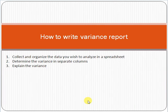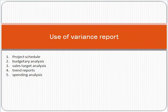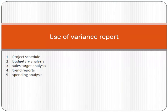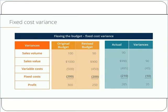Where can we use the variance report? It can be used in project scheduling, budgeting, sales trend, spending, and many other areas. The main purpose of a variance report is to evaluate the performance of a project, to monitor and control the project, and to give insight about the project's performance to senior management.